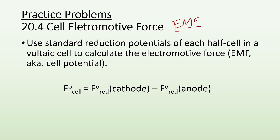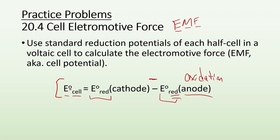Objectives will be to use standard reduction potentials of each half cell in a voltaic cell to calculate the electromotive force EMF, also known as cell potential. The equation is: the voltage of the cell under standard conditions equals the reduction potential of the cathode minus the reduction potential of the anode. The reason it's a minus here is because at the anode you have oxidation, which is the opposite of reduction. On the chart they give you, all the values are for being reduced. So if you're doing the opposite of reduction, you need to subtract that value.